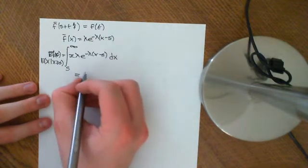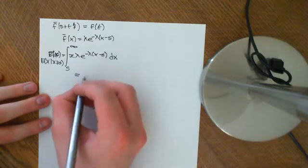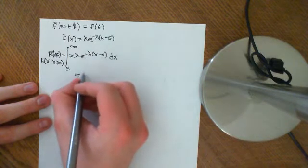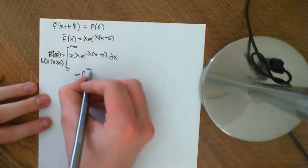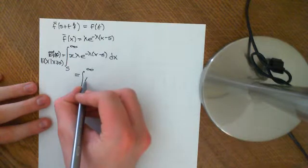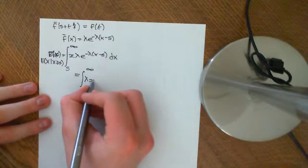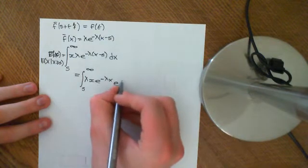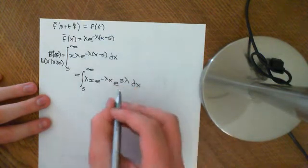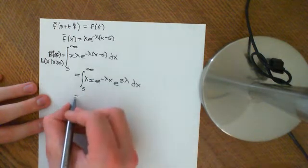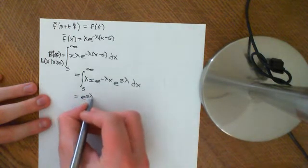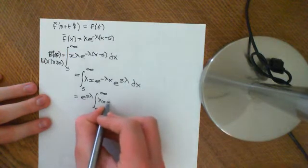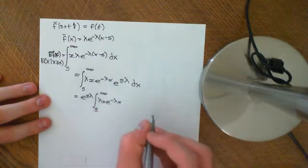This is going to equal — we're going to split this up. So we split the integral from s to infinity into lambda x e to the negative lambda x, times e to the positive s lambda, dx. Then we pull out the e to the s lambda factor, giving e to the lambda s times the integral from s to infinity of lambda x e to the negative lambda x dx.